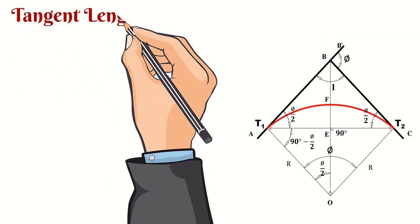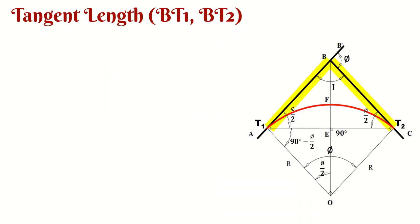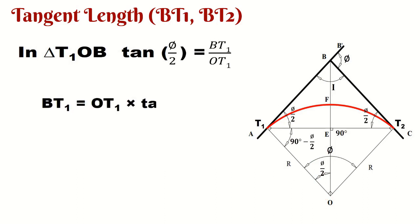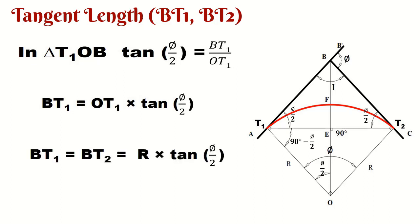Now, how to find the tangent length BT1 and BT2? Consider the triangle T1OB. Take the tangent of angle φ/2, which equals the perpendicular BT1 divided by the base OT1. Therefore BT1 equals OT1 multiplied by tan(φ/2). So BT1 equals BT2 equals R·tan(φ/2), where R is the radius of the curve. The equation for tangent length is R·tan(φ/2).